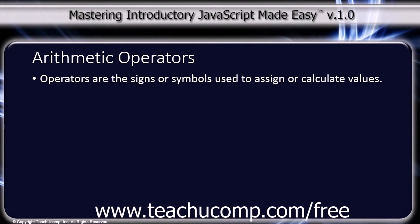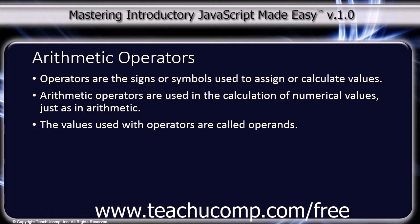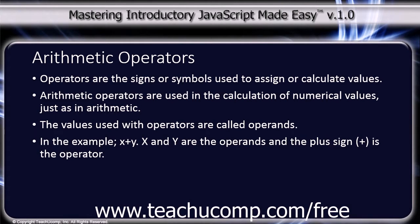Operators in JavaScript are signs or symbols used to assign or calculate values, such as the plus sign. Arithmetic operators are used in the calculation of numerical values, just as in arithmetic. The values used with operators are called operands. In this example, x plus y, x and y are the operands, and the plus sign is the operator.